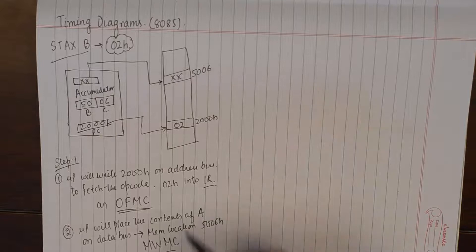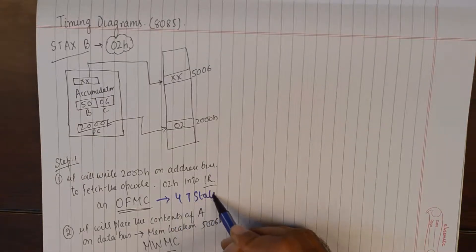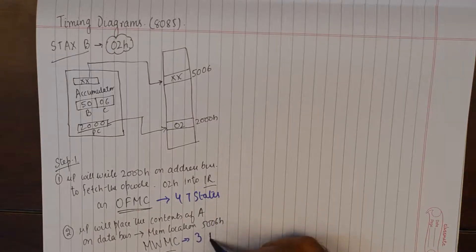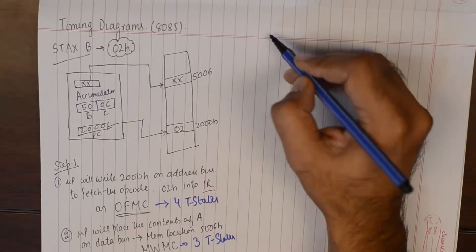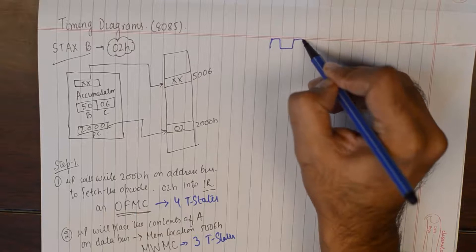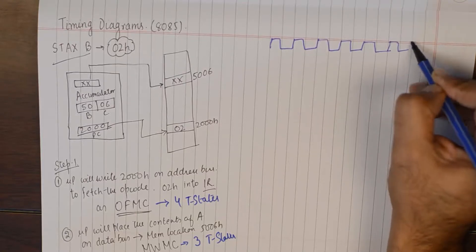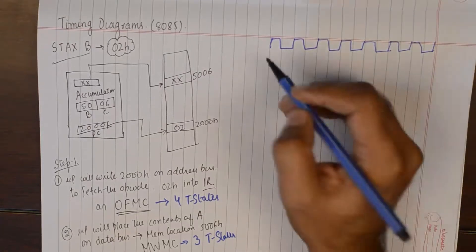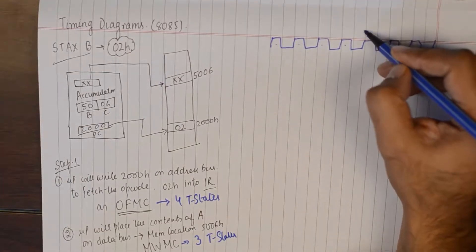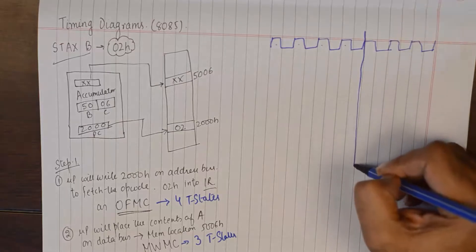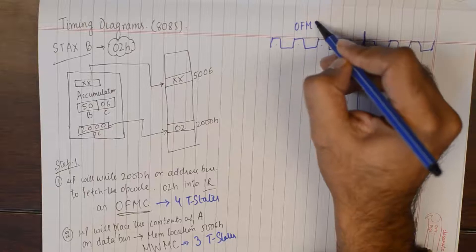For that we know that opcode fetch machine cycle takes four T states and memory write will take three T states. So we will try and make seven T states. It's better to segregate them beforehand.